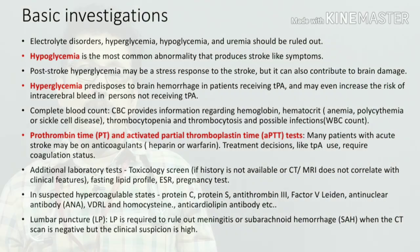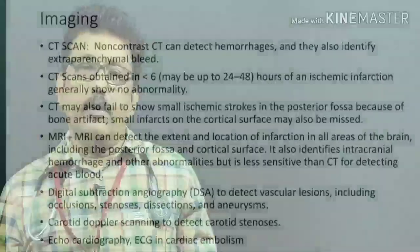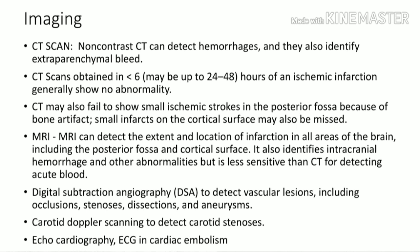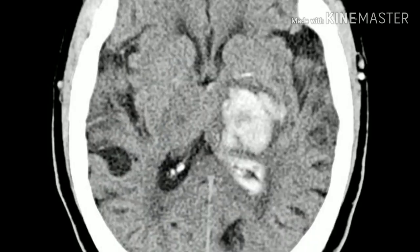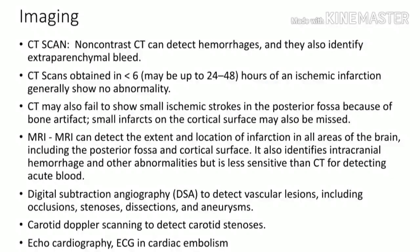Once the patient is stabilized, immediately send them for a non-contrast CT scan. This is the most important investigation from the emergency room in acute stroke — it can reliably detect acute hemorrhages. It may not pick up an acute ischemic stroke, but it effectively rules out hemorrhagic stroke, which is critical for treatment planning.